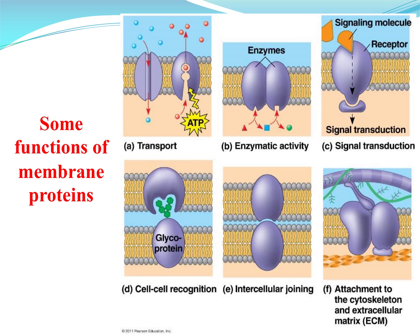The main function of proteins is transport, but they do other things too. They're involved in enzymatic activity and chemical reactions inside and outside the cell. They handle signal transduction — passing messages from outside to inside the cell. They're involved in cell-to-cell recognition, which ties to immunity — a tag saying 'I'm a liver cell, don't kill me,' or identifying a virus for attack. Intercellular joining glues cells together, and they also join the cell to the extracellular matrix, which is why liver cells stay where the liver is supposed to be.